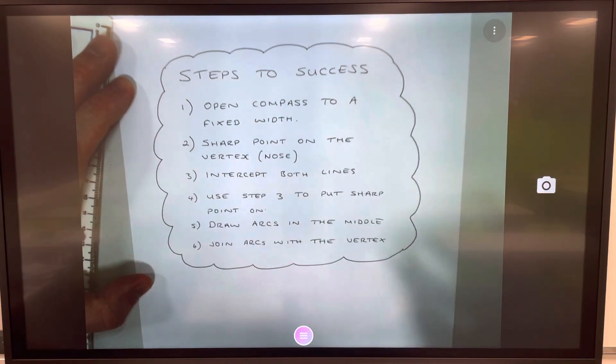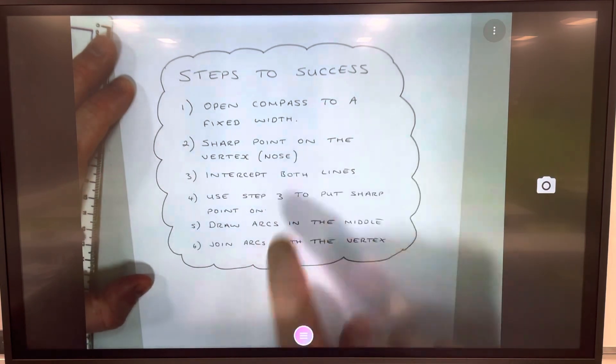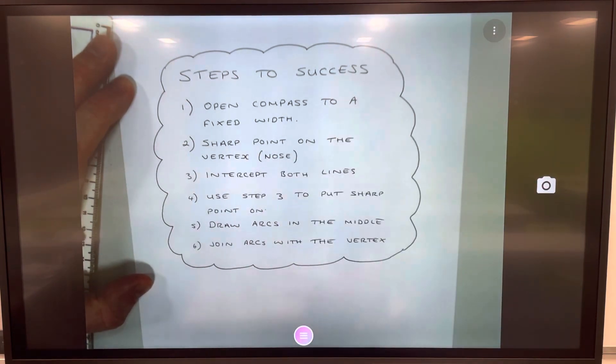Once you've got the sharp point on there, you can then draw your arcs in the middle of the angle. Once you've got that cross, then you can join that with the vertex, which is the nose of the angle. Have a good go. It takes a lot of practice, as I say, but perseverance.